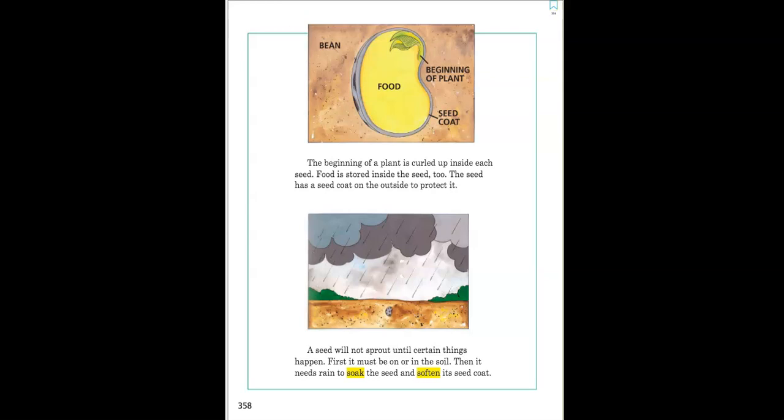The beginning of a plant is curled up inside each seed. Food is stored inside the seed too. The seed has a seed coat on the outside to protect it.